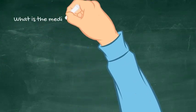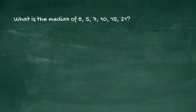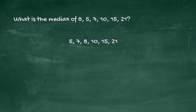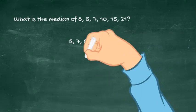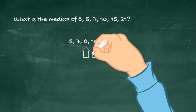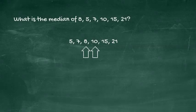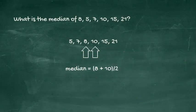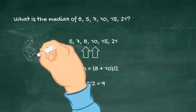Here is an example. What is the median of 8, 5, 7, 10, 15, 21? First, arrange the numbers in ascending order. There are 6 numbers in the series, and 2 fall in the middle, 8 and 10. So the median equals 8 plus 10 divided by 2, which equals 18 divided by 2, which is 9.